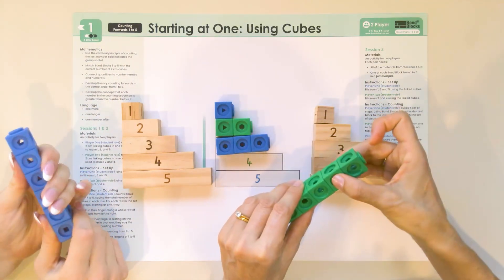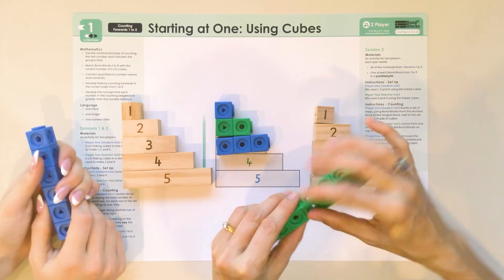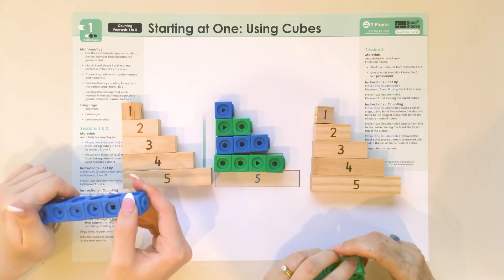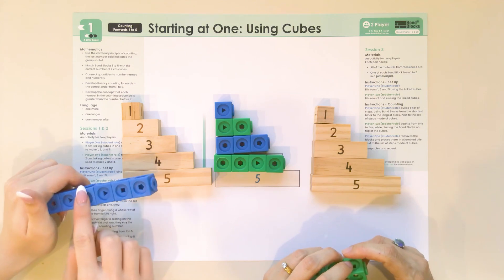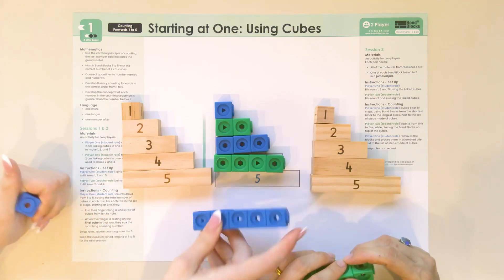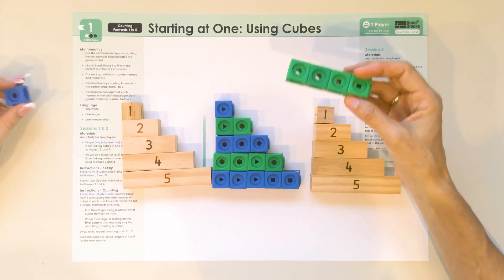4. 1, 2, 3, 4. And in 5. 1, 2, 3, 4, 5. Great, and we'll get rid of these ones.